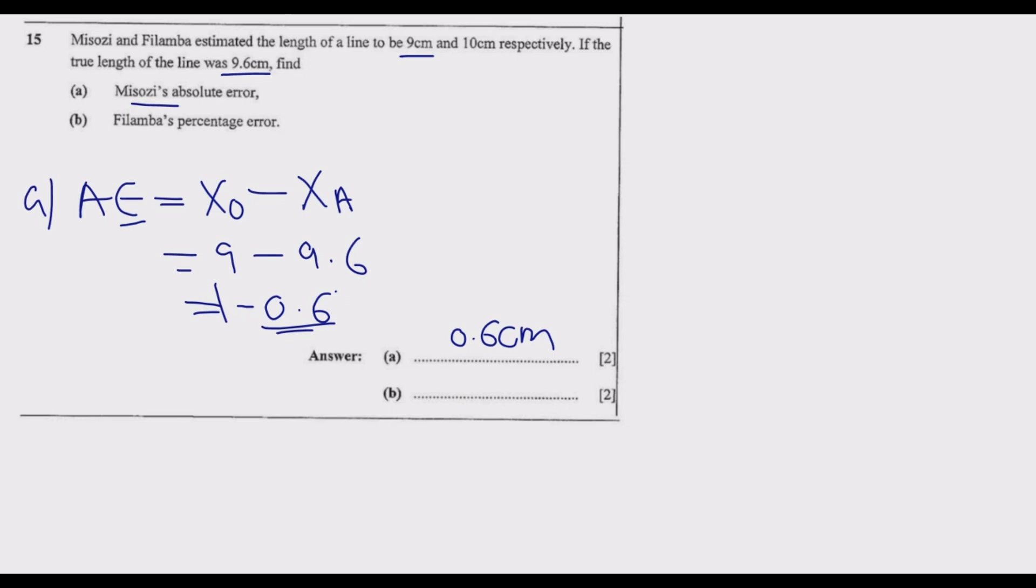Part B is Filamba's percentage error. The percentage error PE is given by the absolute error over the actual value or the true value. In terms of percentages, how far away is Filamba's measurement from the true value?